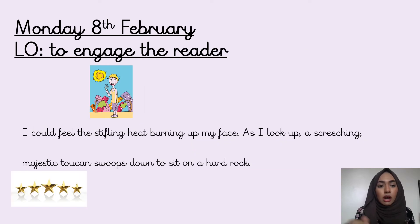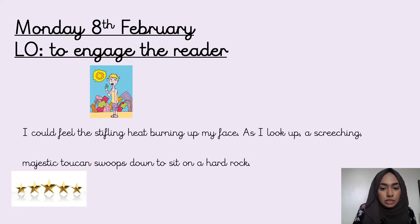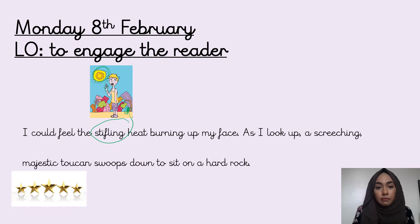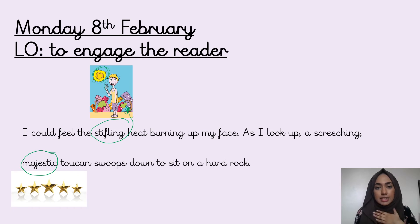Now we'll look at the next two sentences — read along with me. I could feel the stifling heat burning up my face. As I look up, a screeching majestic toucan swoops down to sit on a hard rock. Let's start with the word stifling — you can see this man who is very, very hot, sweating with a fan on his face. Stifling means so hot it's hard to breathe — tell your pencil what stifling means. So this rainforest is that hot that you can't breathe in it. The next word is majestic — we've come across this before. Majestic means extremely beautiful, so instead of just saying it's beautiful, we understand this toucan is extremely beautiful.